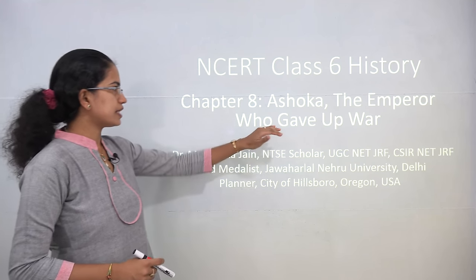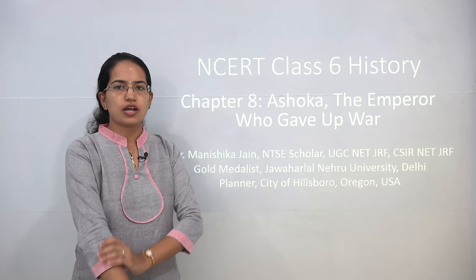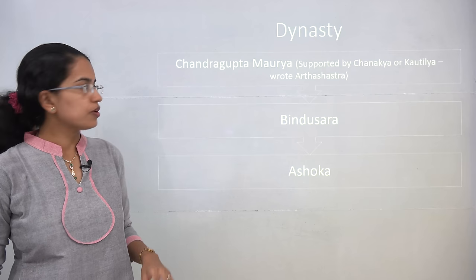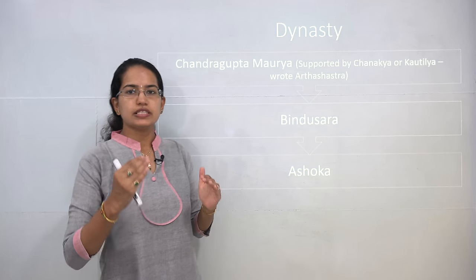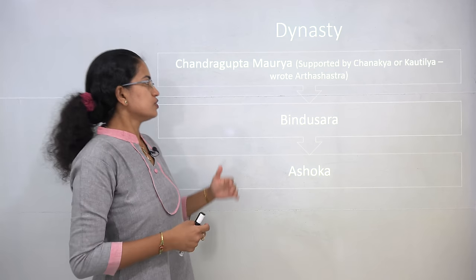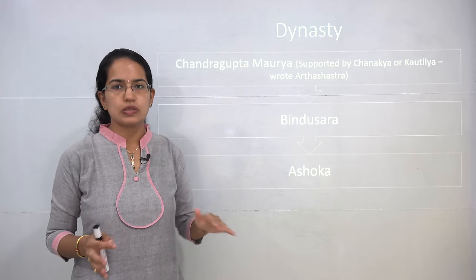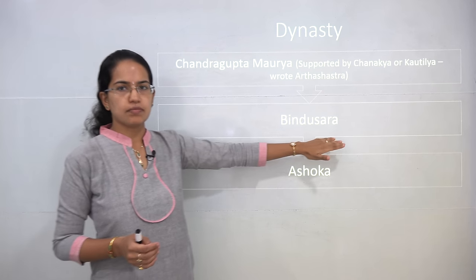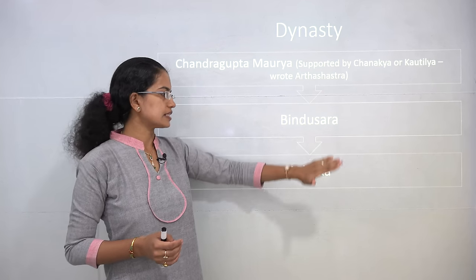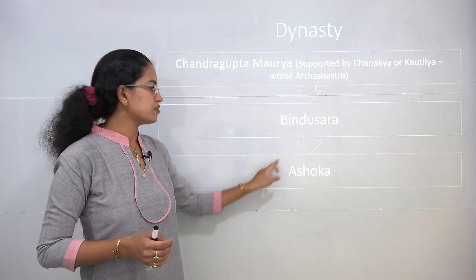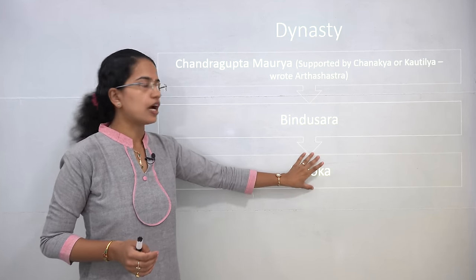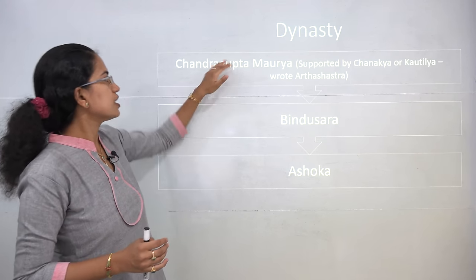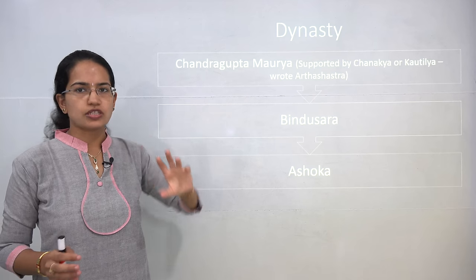Welcome back. We will start with chapter 8 in class 6 history. This chapter talks about Ashoka, the emperor who finally gave up war. Before we start with Ashoka, we will look at how the Mauryan dynasty worked. The first of the major rulers under the Mauryan dynasty was Chandragupta Maurya, succeeded by his son Bindusara, who was finally succeeded by his son Ashoka.